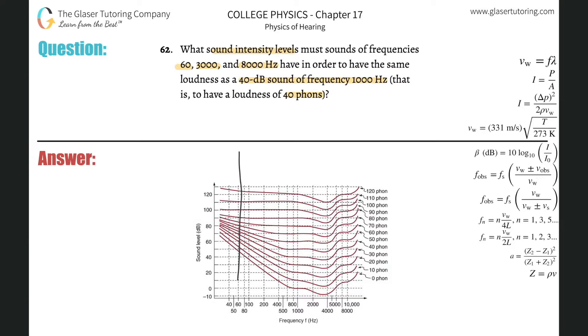So here's 60, here's 3000, going to be right about halfway in between these two, right? And then 8,000 is going to be right about here.